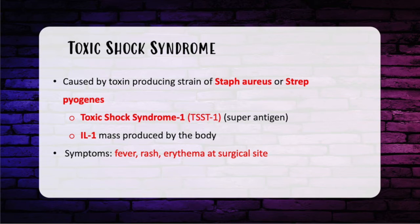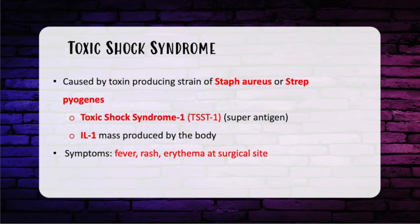The pathogen is a toxin-producing strain of Staph aureus or Strep pyogenes. The culprit is the toxic shock syndrome toxin-1, or TSST-1, a super antigen that causes widespread immune stimulation. The super antigen triggers the body to produce massive amounts of IL-1, which causes fever.